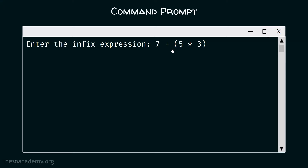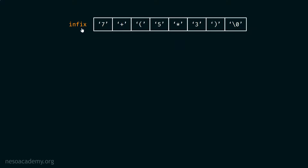Later on we will write code to handle spaces as well, but right now I am assuming there are no white spaces in the expression. This is how our infix array looks after receiving input from the user — we have all the characters within this array, and at the end we also have backslash-zero. The gets() function will automatically add this null terminator to indicate the end of the string. So in total, we have 8 characters: 7, plus, left parenthesis, 5, star, 3, right parenthesis, and backslash-zero.